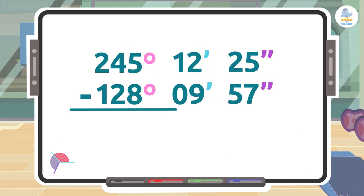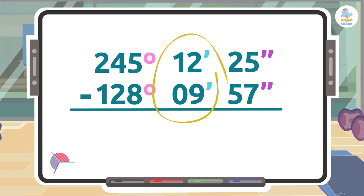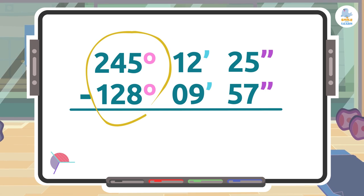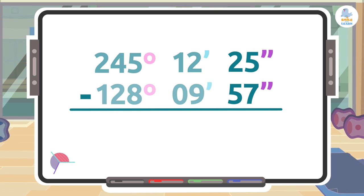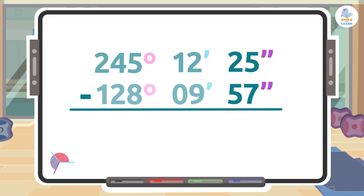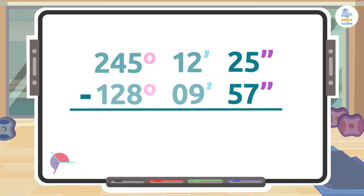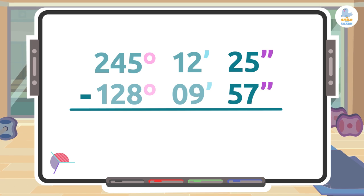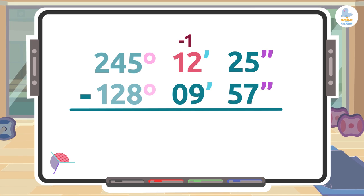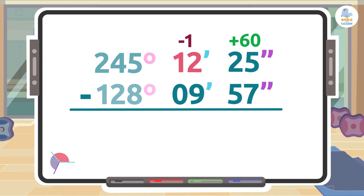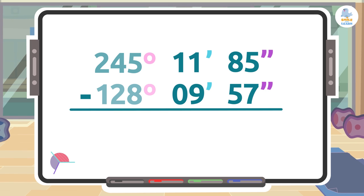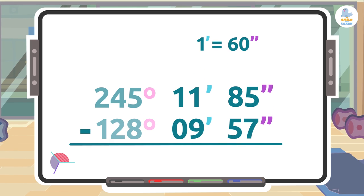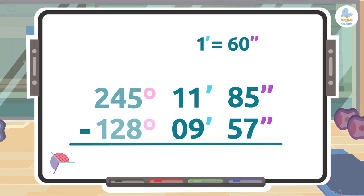In the seconds column we see that we have to subtract 57 from 25, and we know that this is not possible. So what are we going to do? We will take one minute off from the minutes column and give it to the seconds, so we will have 11 minutes and 85 seconds. How did we get to 85? Because one minute is 60 seconds. 60 plus 25 is 85.